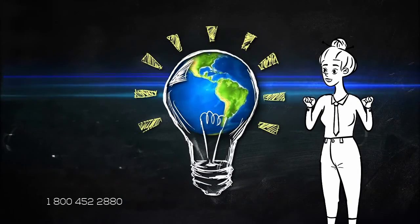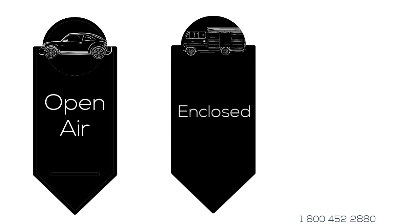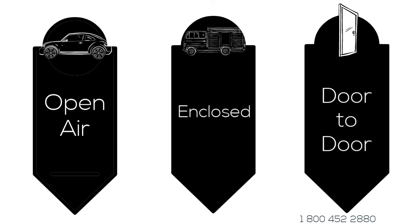We offer different types of shipping services that will fit any budget. Open air, the fastest and cheapest way to transport your vehicle. Enclosed, a little more time to deliver but protection from all the elements. Door-to-door, a way to deliver your vehicle right to your doorstep.